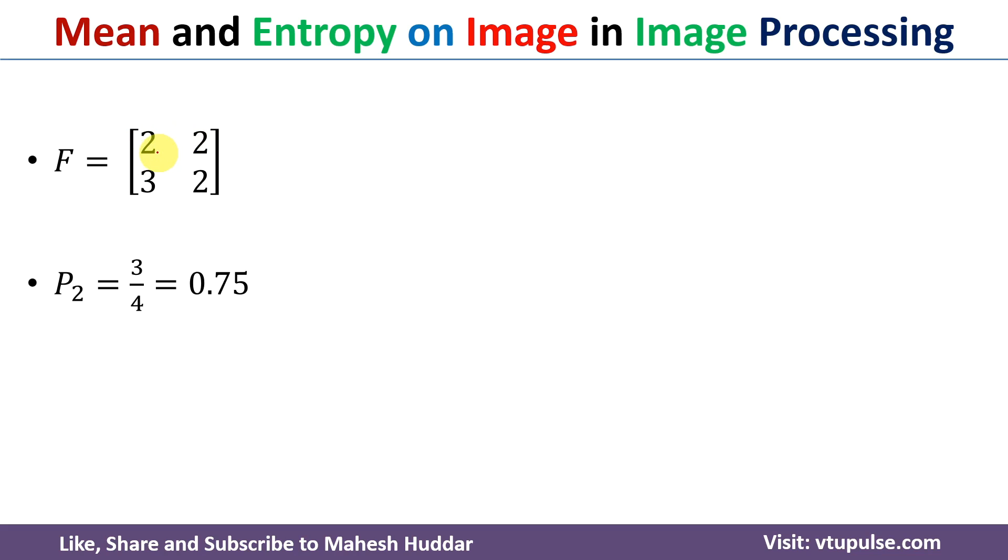Given this image, first we need to calculate the probability of each pixel value. In this case, there are 4 pixels. Three pixels have the value 2 and one pixel has value 3.